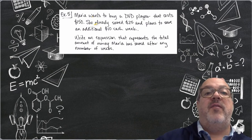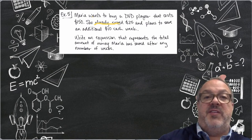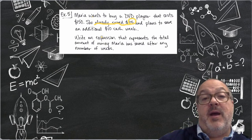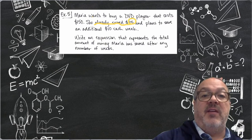In example 5, Maria wants to purchase a DVD player. It's going to cost her $150. Now, we already know that she has saved $25.